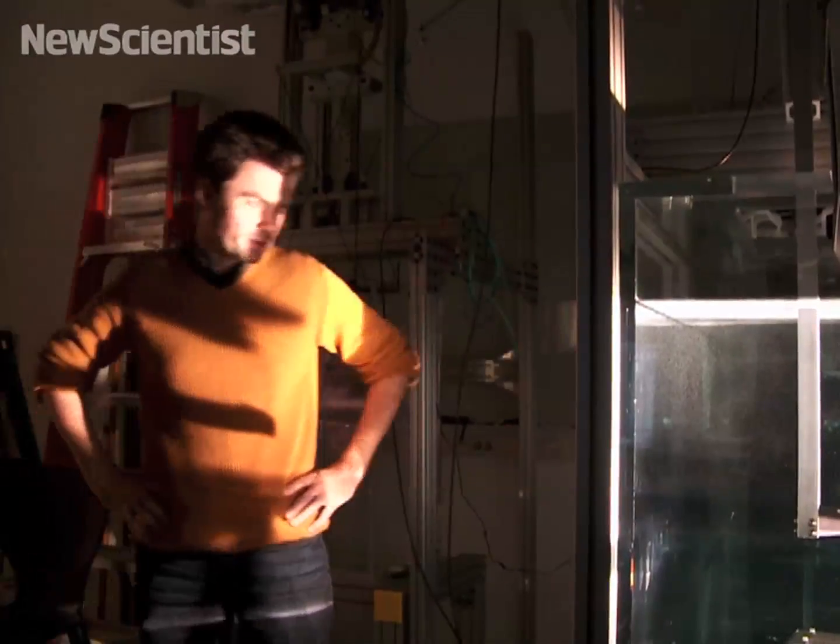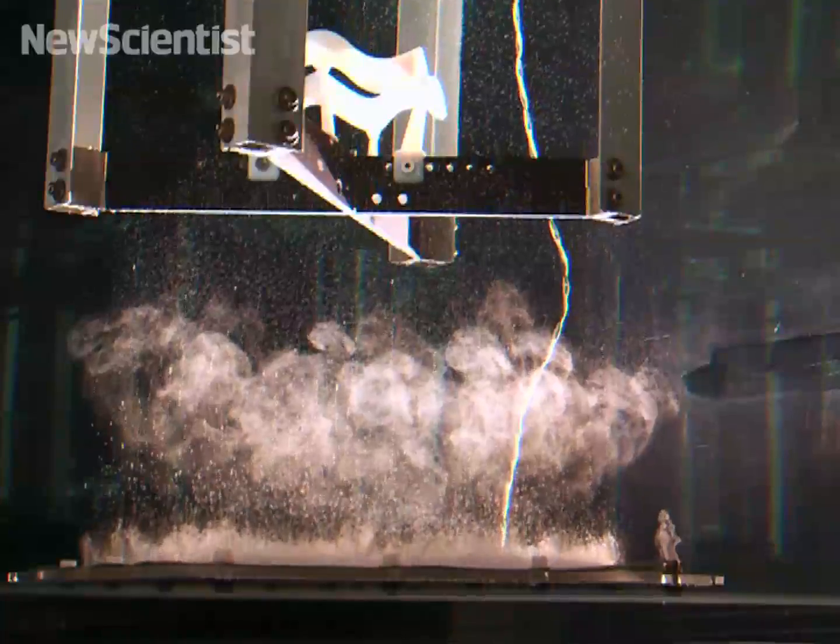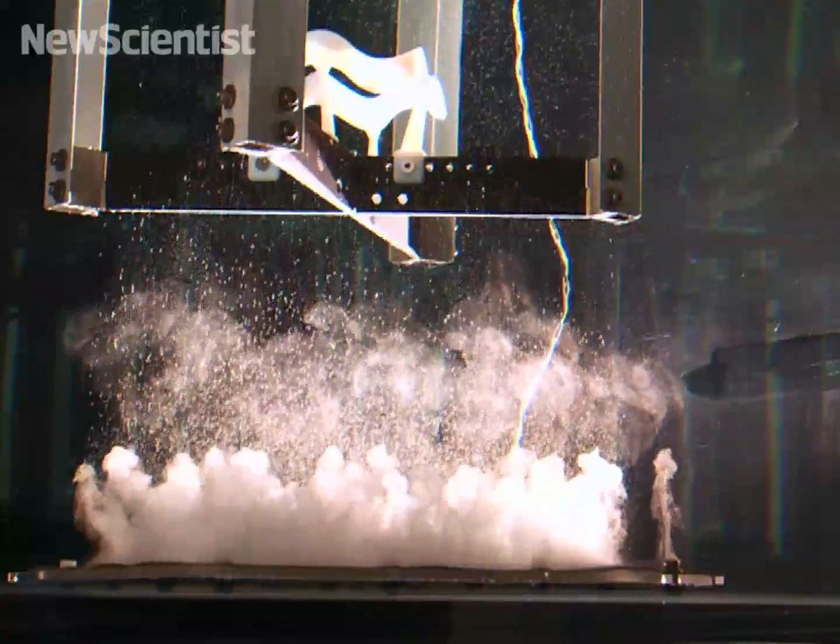So there's just a little grid underneath on the bottom of the tank and basically you run current through this grid. This makes micro-bubbles of hydrogen and oxygen.